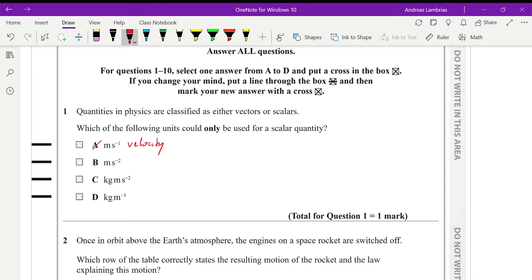Then for B, we can identify that this is for acceleration, which is the change of velocity over time. So it's meters per second per second, therefore meters per second squared. This is also a vector quantity, so it's not what we're looking for.